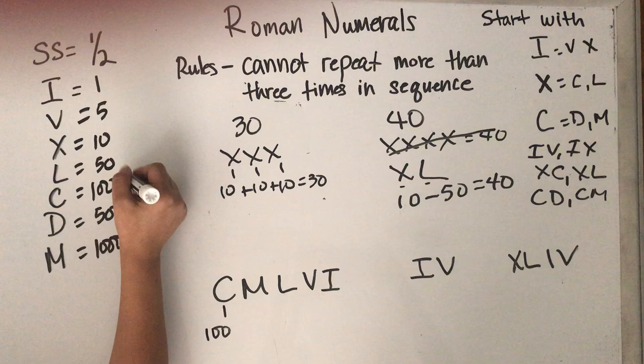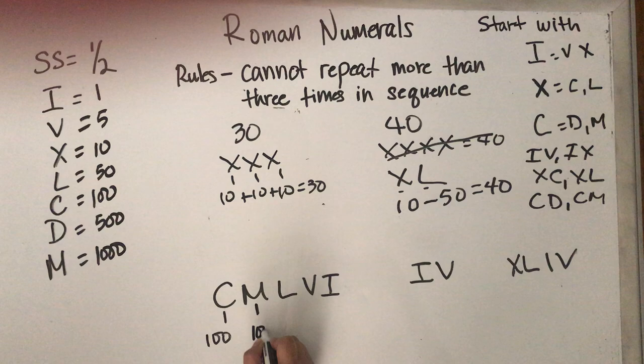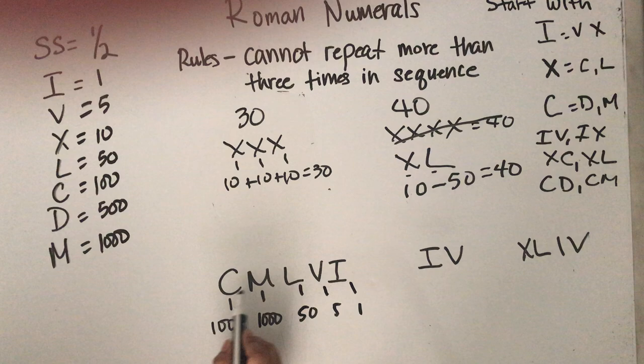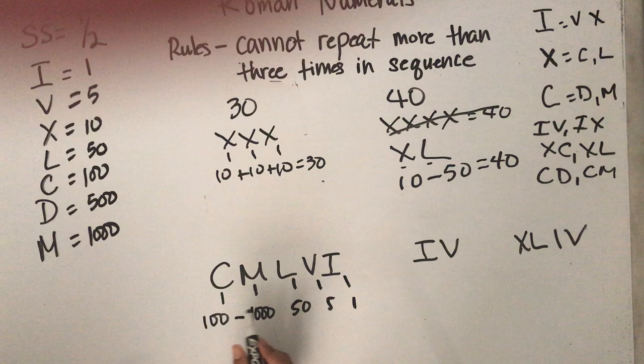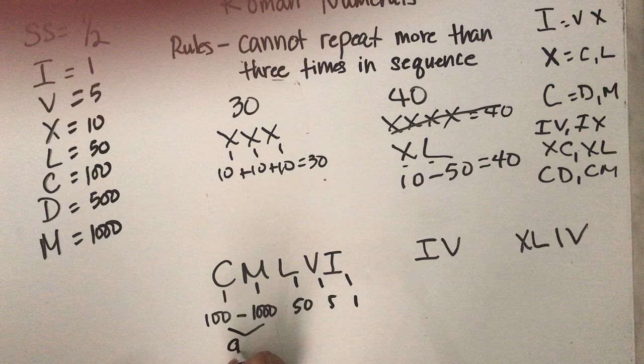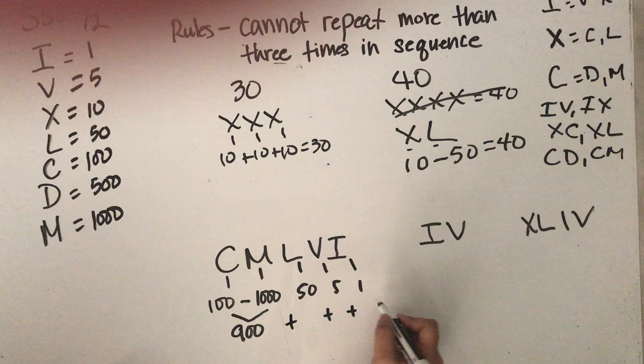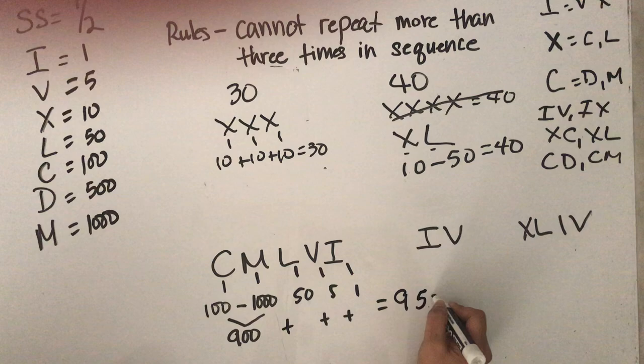M is 1,000. L is 50. V is 5. And then I is 1. So you notice that C is smaller than M, so this has to be a minus. So 100 minus 1,000. Remember, there's no negative numbers. So this is simply 900. Then you can add 900 plus 50 plus 5 plus 1. And then you would have 956.